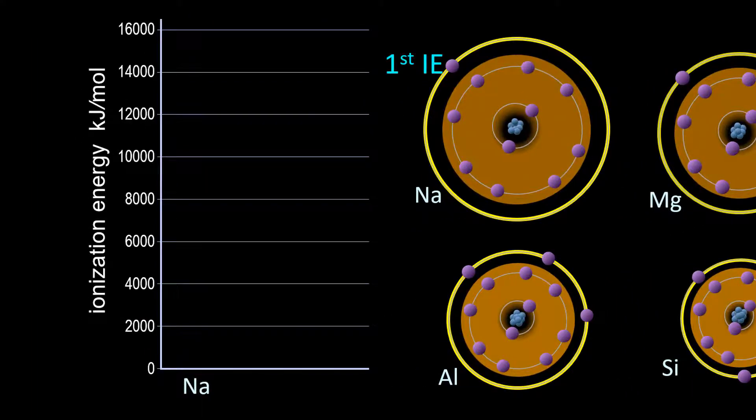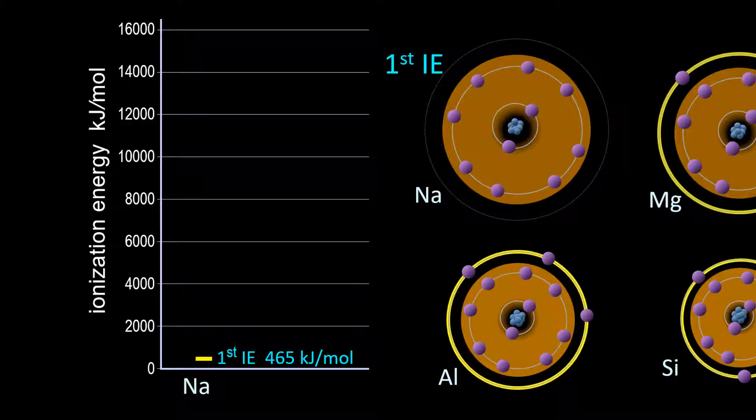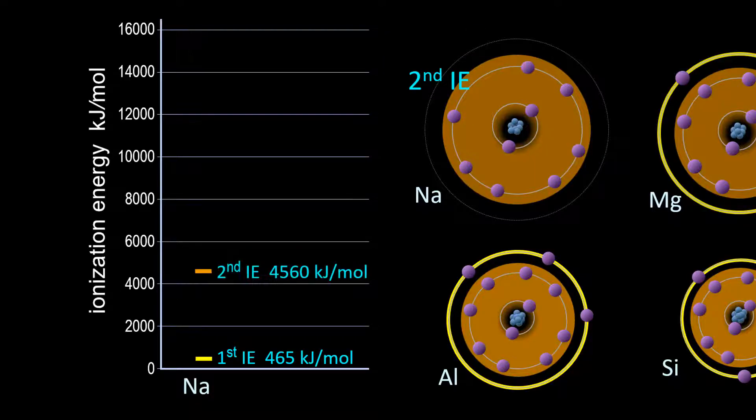Let's keep track of each successive ionization energy on a vertical axis at left. The first ionization energy of sodium is low, but that gets us to a neon configuration. So will there be a large change with the second IE? Yes! Sodium's second ionization energy is nearly ten times that of its first IE.